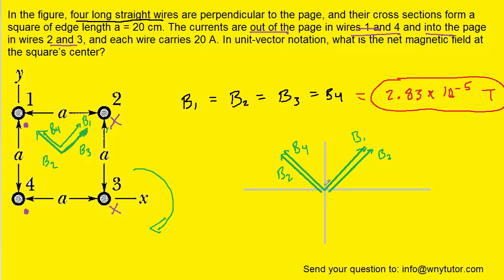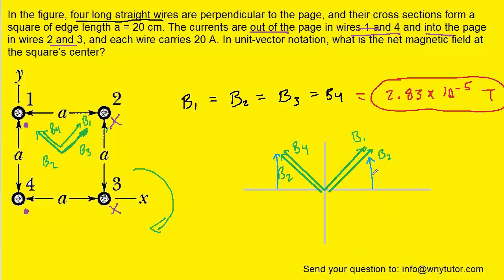We've redrawn the magnetic field lines on an x-y axis for clarity. To find the net field, we break them into components. Taking B2 as an example, its x-component points in one direction and its y-component in another. For B2 and B4, their x-components point left and y-components point up. For B1 and B3, the x-components point right. The two leftward x-components cancel with the two rightward x-components, so we only have to consider the y-components. The y-component is opposite angle theta, so By = B × sin(θ).